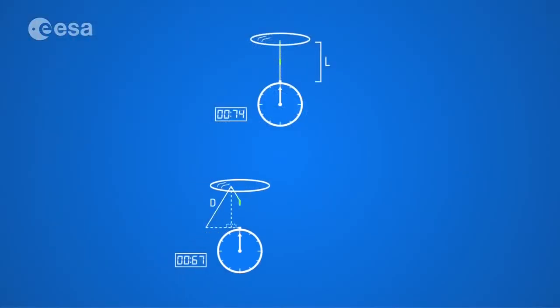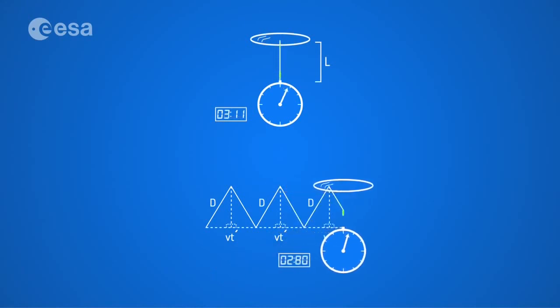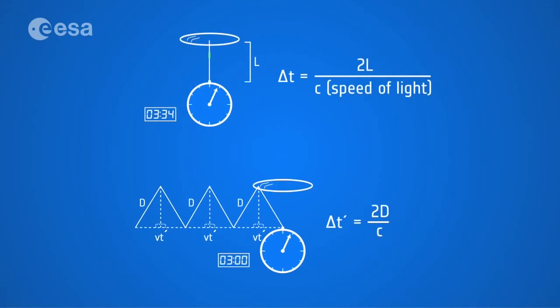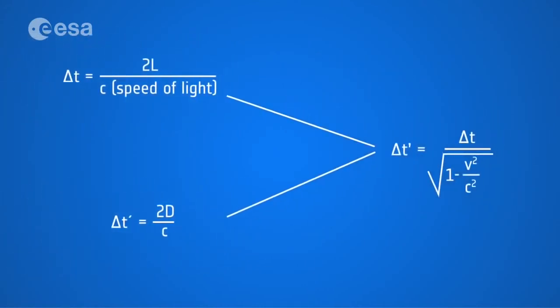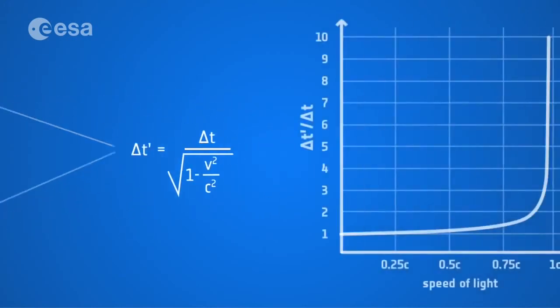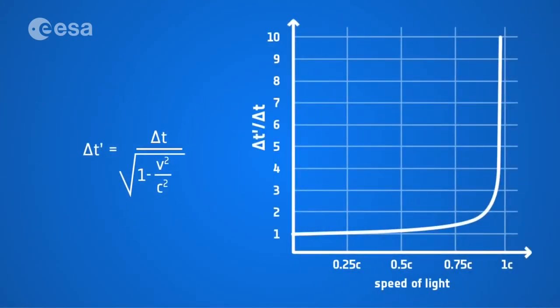Now this seems contrary to all our everyday experience. My watch doesn't seem to lose time after I've run down the street. But the mathematics needed to derive the time dilation factor is a simple application of Pythagoras's principle to our laser pulse model. And what it shows is that the time dilation effect only really manifests itself at incredibly high relative velocities, those close to the speed of light. And when it does, the consequences are dramatic.